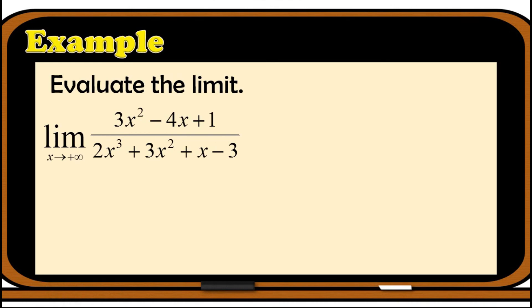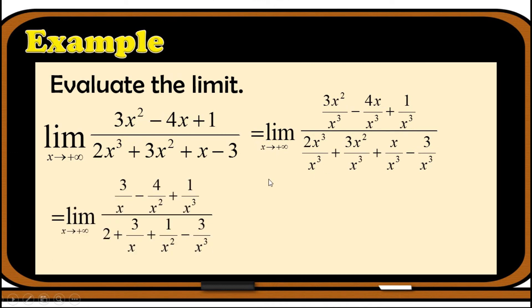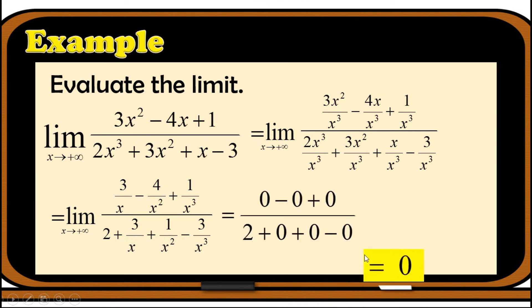For the third example: evaluate the limit of (3x² - 4x + 1)/(2x³ + 3x² + x - 3) as x approaches positive infinity. The highest exponent is x³, so we divide each term by x³. This gives (3/x - 4/x² + 1/x³)/(2 + 3/x + 1/x² - 3/x³). Applying the theorem, all 1/x terms go to 0, so we get 0/(2 + 0 + 0 - 0) = 0/2 = 0.